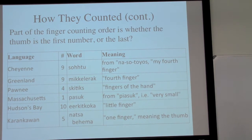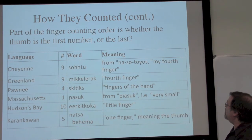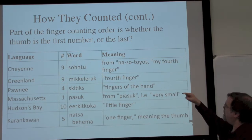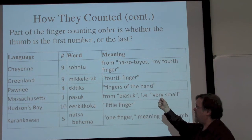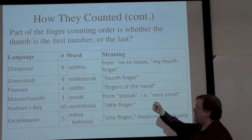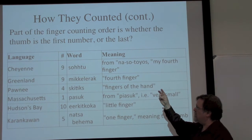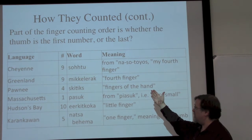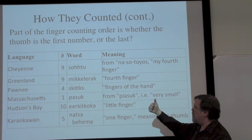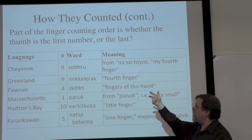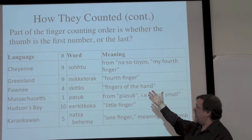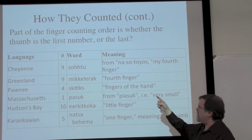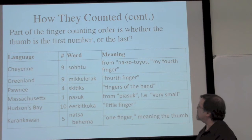When doing this counting, one of the finger counting tactics is whether the thumb is the first number or the last. If I'm counting fingers first, I might go one, two, three, four, and then the thumb becomes the last digit that comes up. Whereas if I'm counting in the other direction, the thumb is the first finger. So the direction of counting determines whether the thumb is first or last.